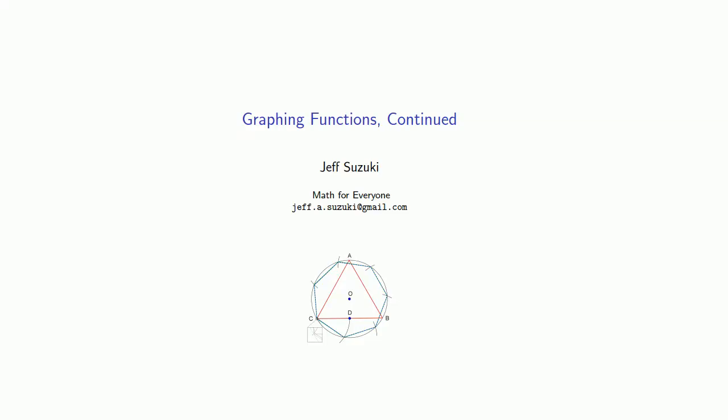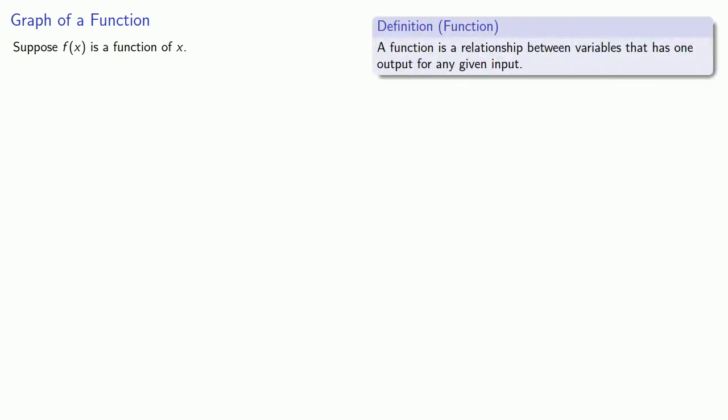So let's put it all together and try to find the graphs of some functions. Before we do that, let's consider things a little bit further. Suppose f(x) is a function of x. Remember that a function is a relationship between variables that has one output for any given input. So for any input value x, there's a unique output value f(x).